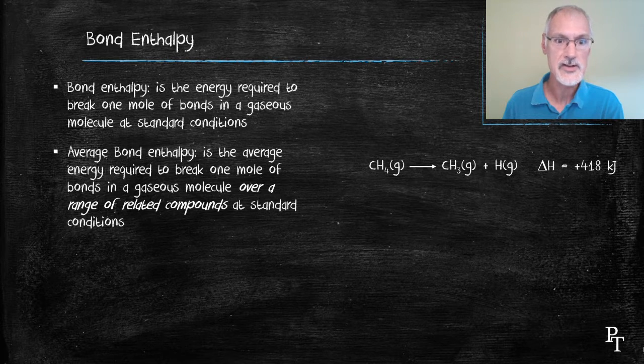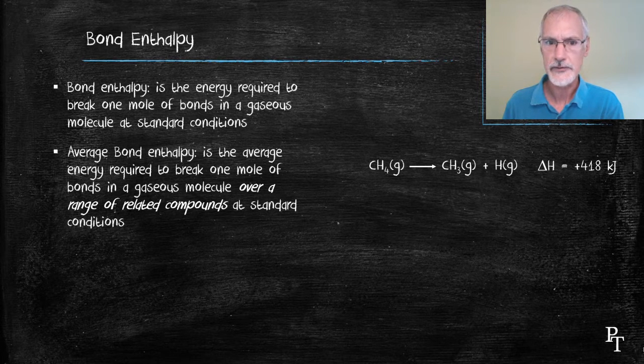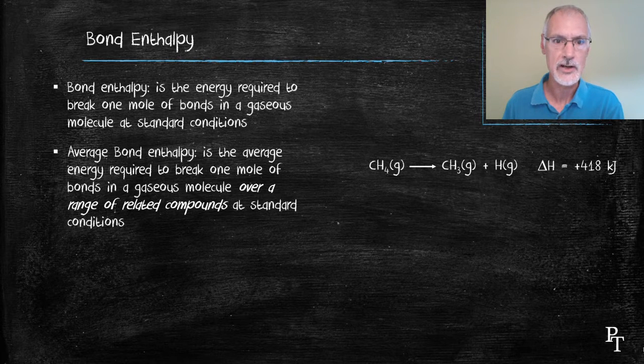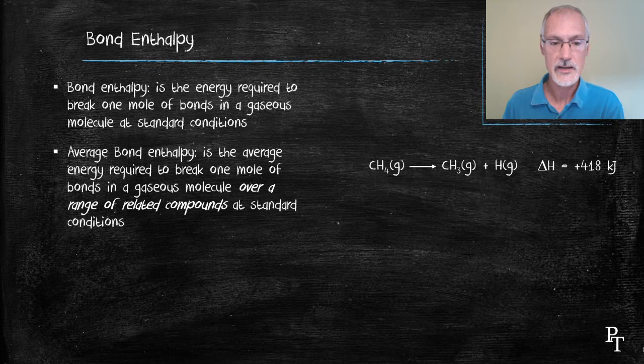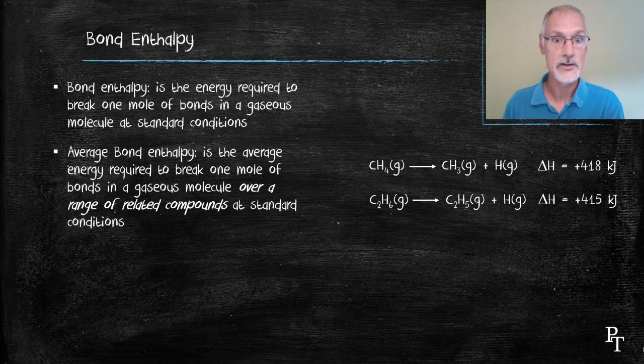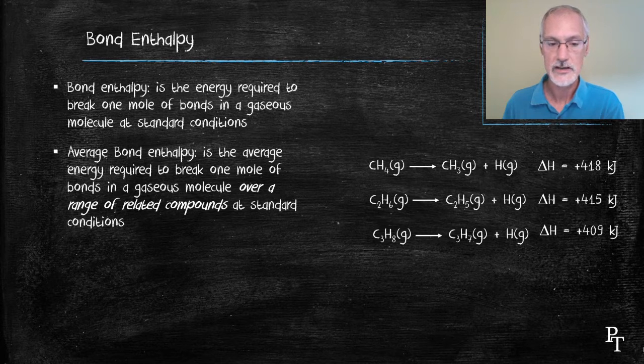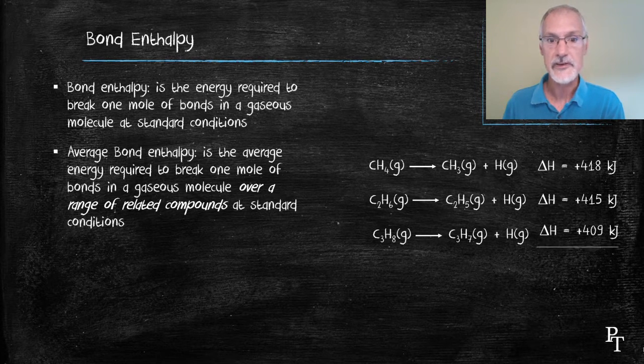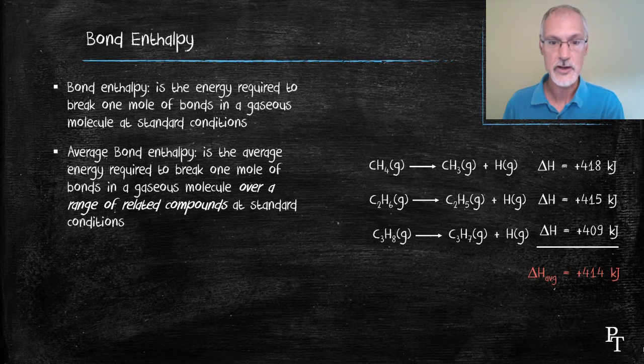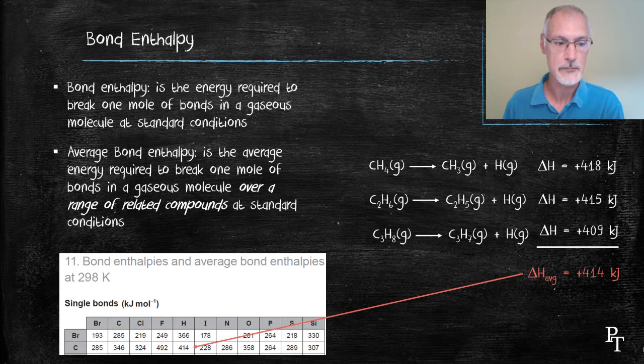Average bond enthalpy is the energy to break one mole of bonds over a range of related compounds. So if I want to know the strength of the carbon hydrogen bond, I might look at the example that I have here for methane, but I might also consider the molecule ethane. And it might have a slightly different bond energy. And here, propane. What we often consider is the average of these numbers for the carbon hydrogen bond. And this is what's presented in your IB data booklet.